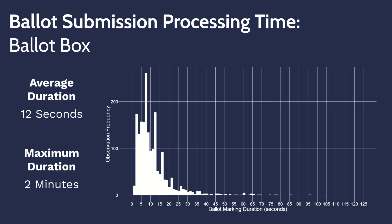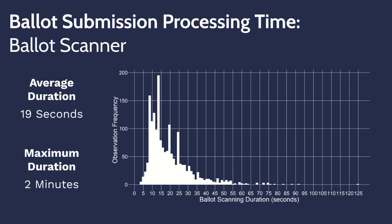A distribution chart of ballot box submission times is currently shown on screen, with a majority of voters submitting their ballots in 5 to 14 seconds. The new ballot scanning process takes voters 19 seconds on average but may take voters a maximum of two minutes to cast their ballot. A distribution chart of ballot scanning times is shown on screen, with a majority of voters scanning their ballots in 11 to 24 seconds.